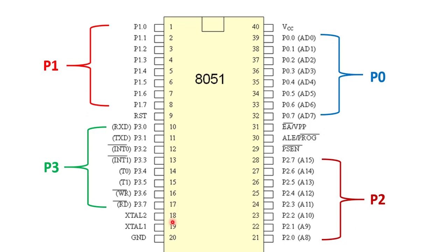Pins 18 and 19 are XTAL2 and XTAL1, used to connect an external crystal oscillator. This crystal oscillator generates the clock signal for the 8051 microcontroller, synchronizing all its components. For example, connecting a 12 MHz crystal helps the microcontroller generate 12 clock cycles per microsecond, so processing speed depends on the crystal oscillator frequency.